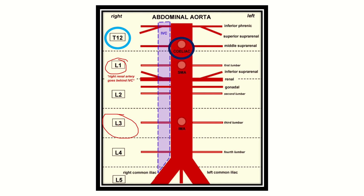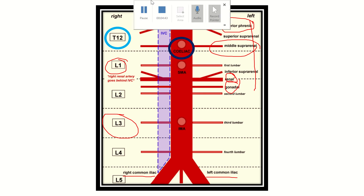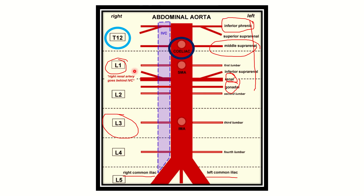The other branches of the abdominal aorta are also important. The two terminal branches are the right common iliac and left common iliac. The lateral branches consist of four pairs: the inferior phrenic, middle suprarenal, renal, and gonadal arteries. The posterior branches are the median sacral artery and the first, second, third, and fourth lumbar arteries. This is one of the most important diagrams for the MRCS exam regarding the abdominal aorta.